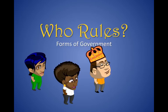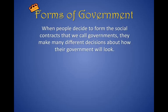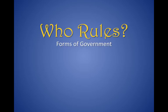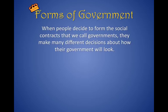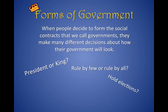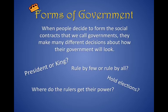It's called "Who Rules? Forms of Government." We're going to talk about the different forms of government — the different ways that government takes shape in people's lives. When people decide to form social contracts — basically an agreement between people to come together and form a government — they make different decisions about how their government is going to look: will you have a president or king, ruled by a few or by everyone, will there be elections, and where do rulers get their power from?